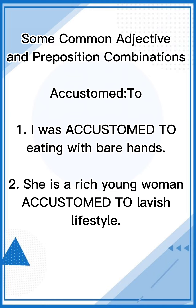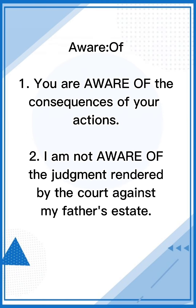There are also some common adjective and preposition combinations, like 'accustomed to.' I was accustomed to eating with bare hands. She is a rich young woman accustomed to a lavish lifestyle.